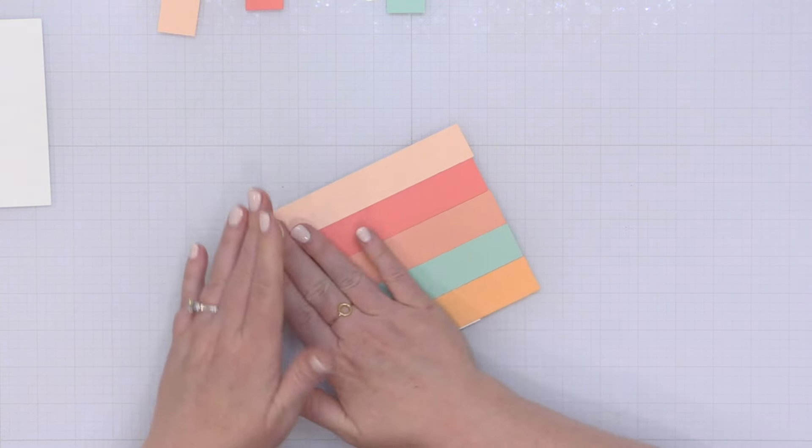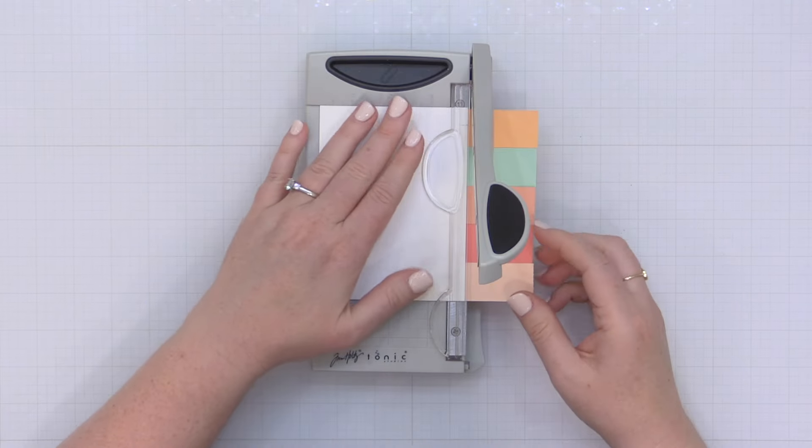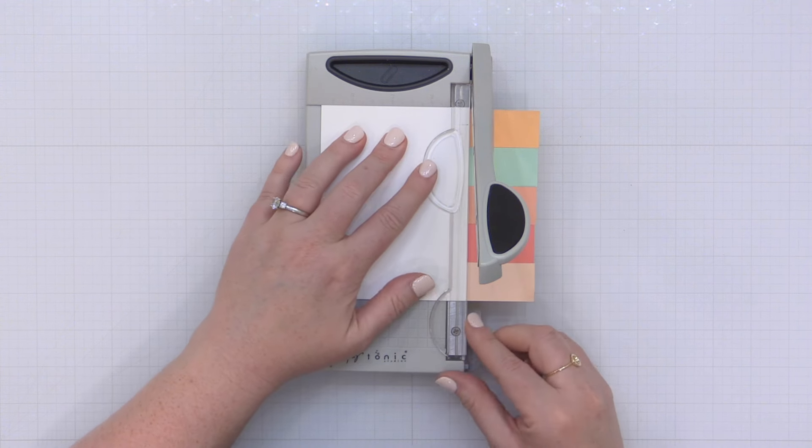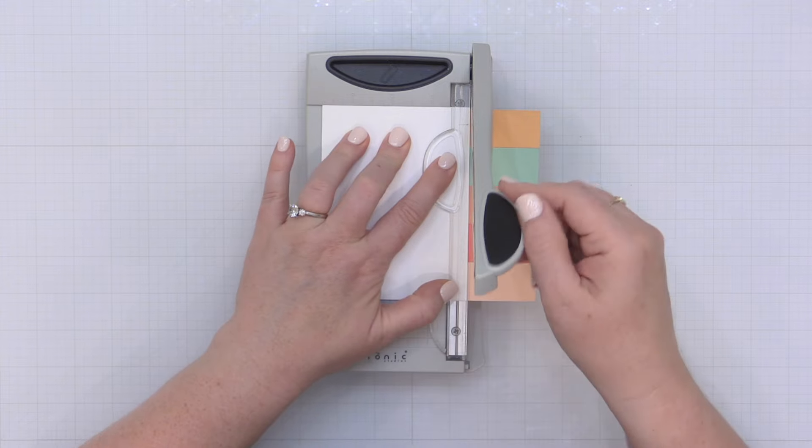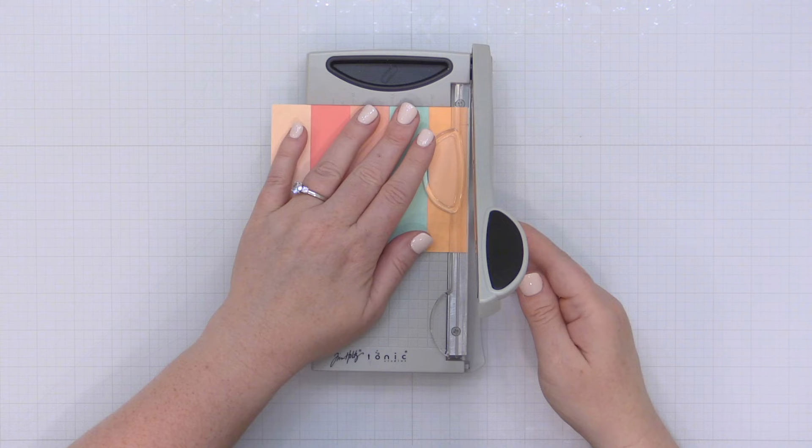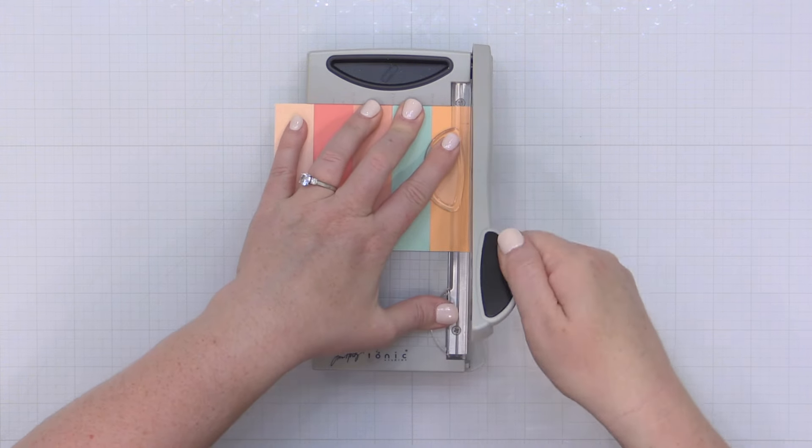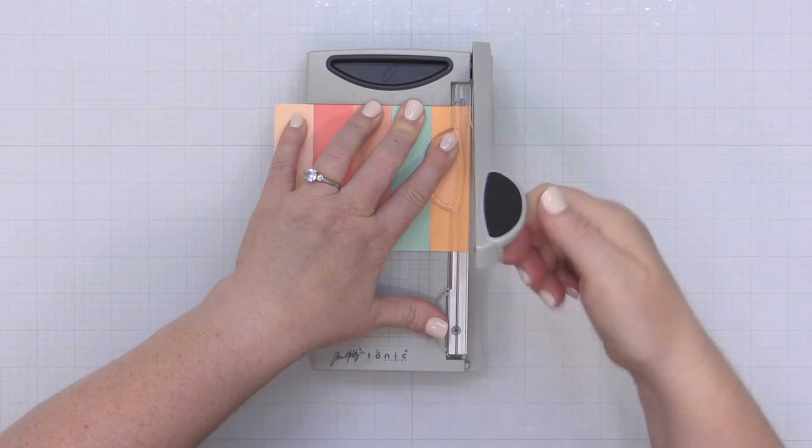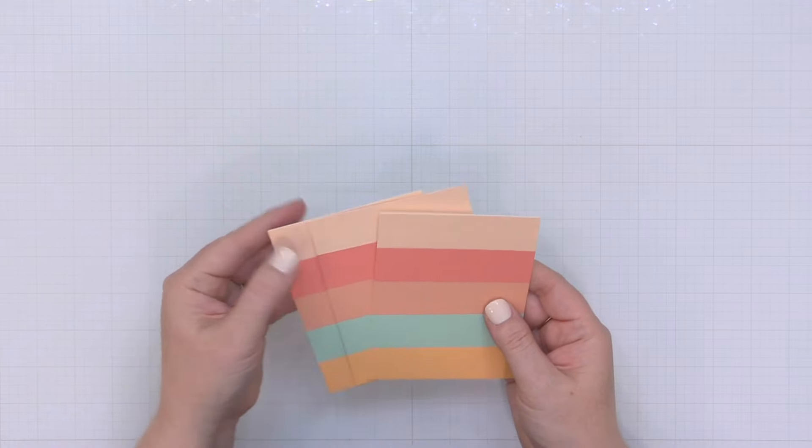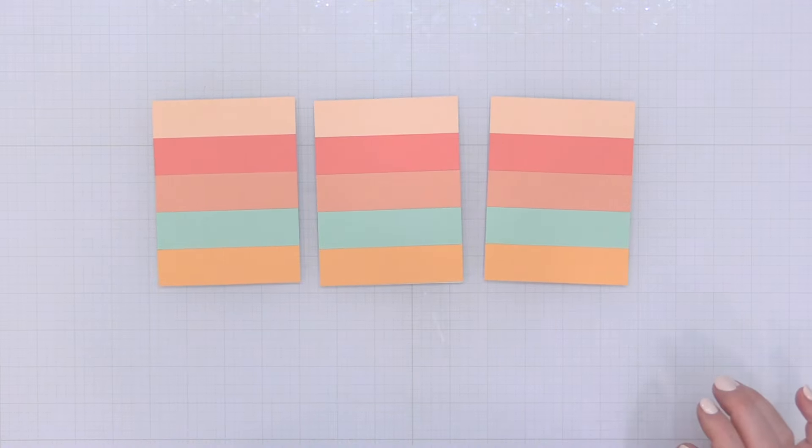Now once I've added all of my strips onto those three panels that I created ahead of time I have some excess. I like it that way. I would prefer to trim it down afterwards so that I make sure everything's nice and squared up. I'm just going to take this to my trimmer and trim off any excess. If I have any white showing on the bottom I'm going to trim that down as well. So you can see I have my three panels here. They look just like beach towels don't they?